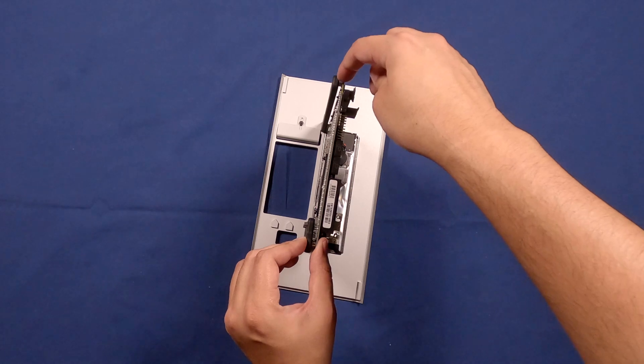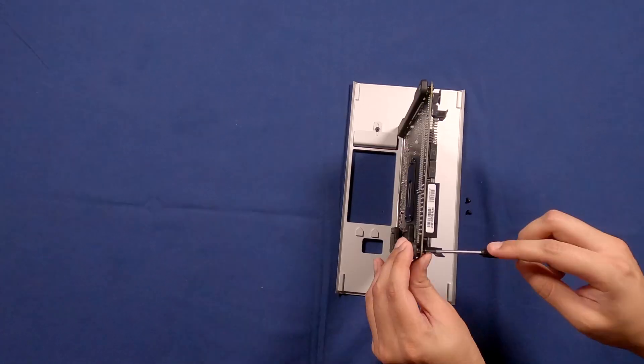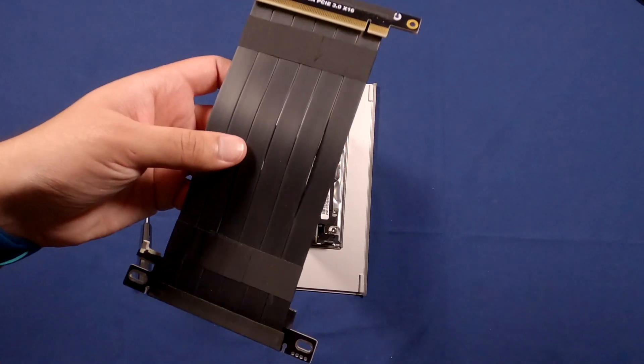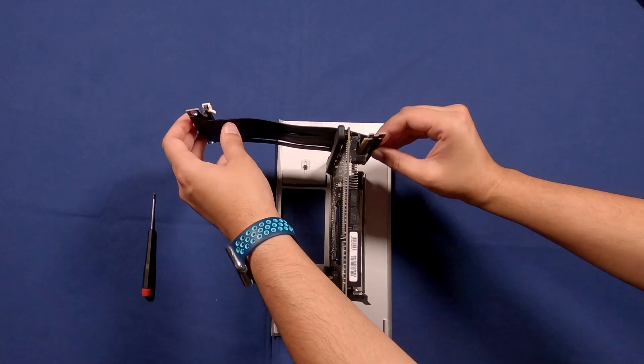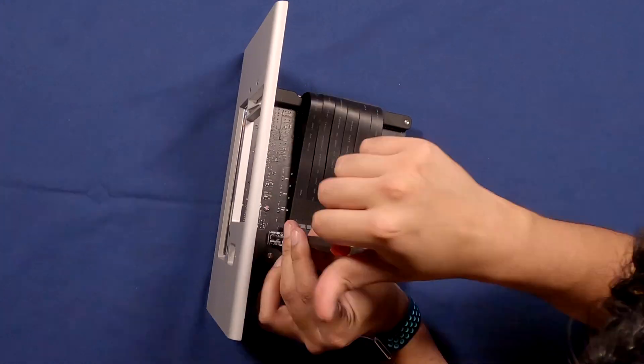As soon as that is done we're going to be adding the riser cable for the graphics card. You're going to want to start by attaching that to the PCIe slot first and then wrapping it around and screwing it in place on the other side.